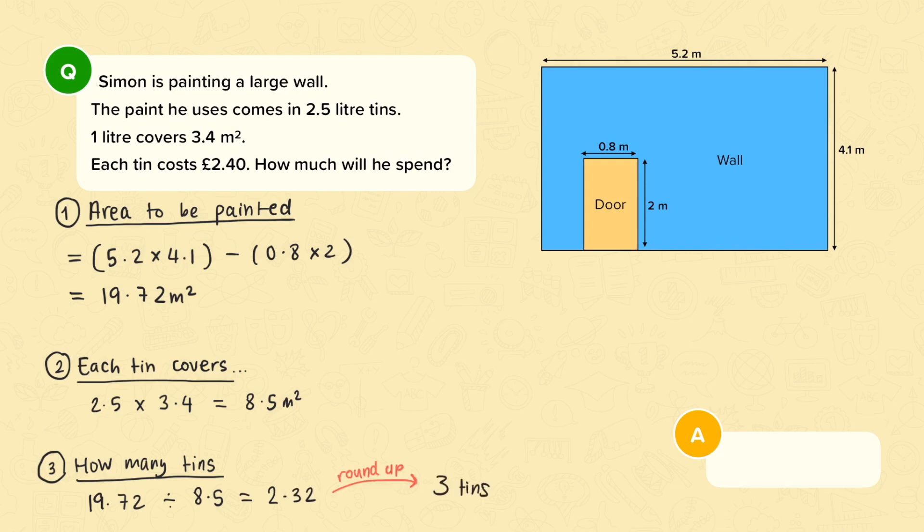So the final step is to work out the cost of three tins. And we do this using the fact that for one tin he would pay £2.40. So for three tins he will need to pay three times £2.40 which is £7.20. So Simon will spend £7.20 painting this wall.